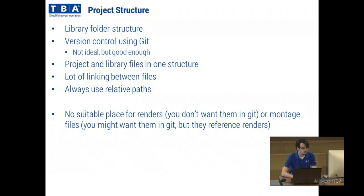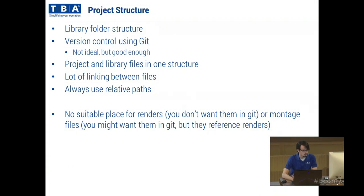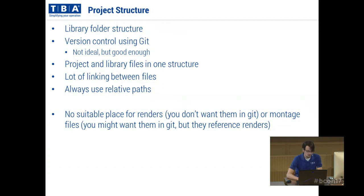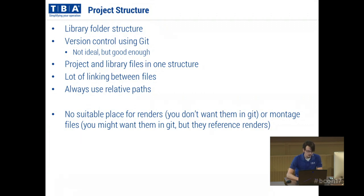Our project structure uses a library folder structure, which we check into Git. Git is not ideal because it has trouble with binary files, but it's good enough and we've been using it for several years. We have library files for all the equipment, containers, buildings, and fences you might find on a container terminal, as well as project files specific to each project. We use a lot of linking, especially dupli groups, and always use relative paths so that you just need the directory tree cloned from Git on any computer and everything works.